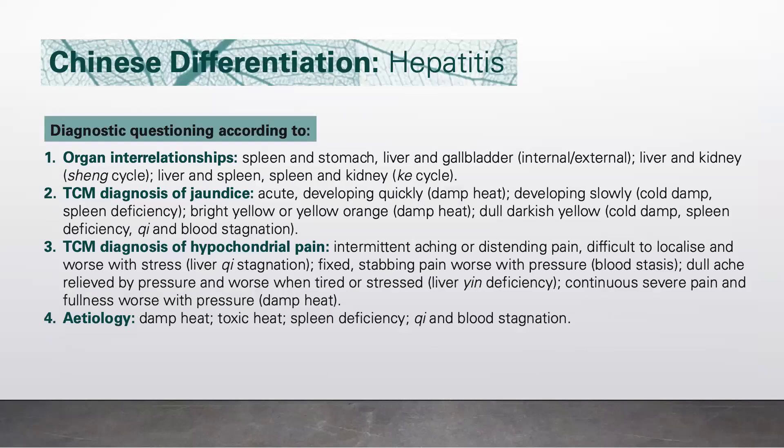Now let's go to the Chinese differentiation. Let's start with organ interrelationships: the spleen and stomach, liver and gallbladder — their internal and external relationships — liver and kidney in the sheng cycle, and liver and spleen, spleen and kidney in the ke cycle.